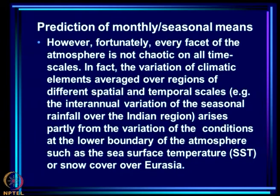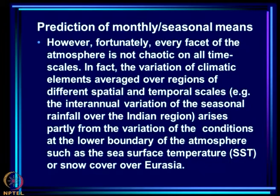There is an inherent limit to prediction of the atmosphere; you can never reliably forecast rainfall at Bangalore on 16 July 2014 — that is a foolish question because it is way beyond the limits of predictability. What you can ask for is prediction of monthly and seasonal means. Although weather is inherently unpredictable beyond about a week, not every facet of the atmosphere is chaotic on all time scales. In fact, variation of climatic elements averaged over regions of different spatial and temporal scale — for example, inter-annual variation of seasonal rainfall over the Indian region — may be predictable.